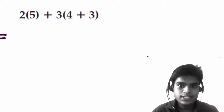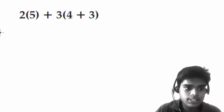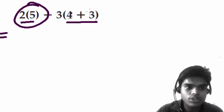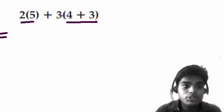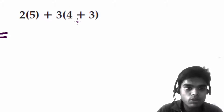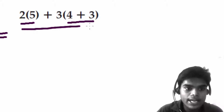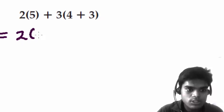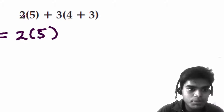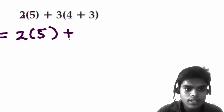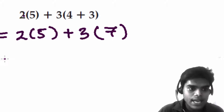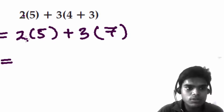Let's start with the first one. Try to do one thing at one step. Here we have a grouping, a multiplication, and then we need to add. We'll do everything one by one — first finish the grouping, then multiply, then add. So: two times five, remember there is a multiplication symbol, then plus three, and then four plus three equals seven.